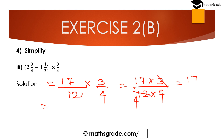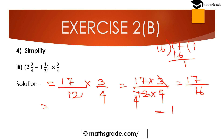Now 17 divided by 4×4 gives 17/16. Convert this improper fraction 17/16 into a mixed fraction: 17 divided by 16, quotient is 1, remainder is 1. So the answer is 1 and 1/16.